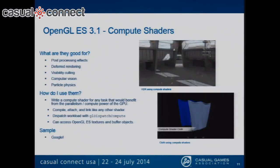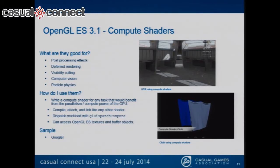We're going to start with Compute Shaders. What are they good for? They're good for post-processing effects, deferred rendering, visibility culling, computer vision, and particle physics. Compute Shaders are a new shader that sits alongside the 3D pipeline but is independent. It still works well with 3D primitives. It has no defined input and output, meaning it works through side effects of writing to textures, images, and buffer objects. A really good reason to use this is when you don't want to go through the entire 3D pipeline just to do operations on a full-screen quad — it avoids all that overhead of spinning up the vertex shader. You compile it just like any other shader, and instead of issuing a draw call, you use gl_dispatch_compute.